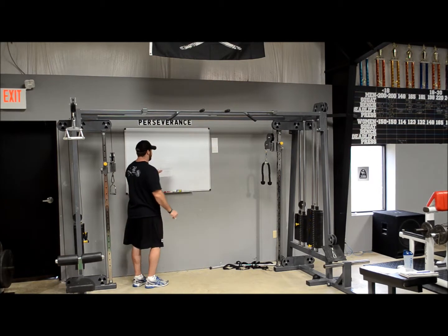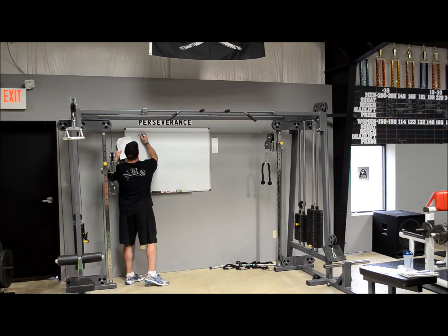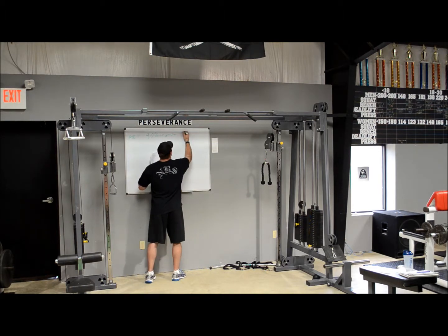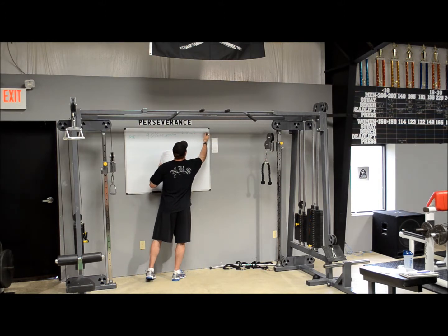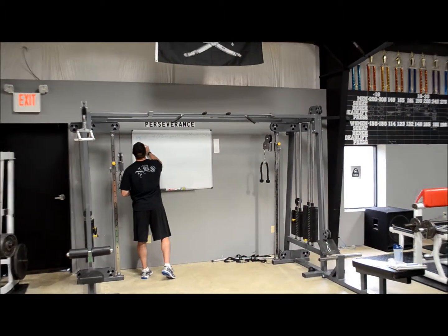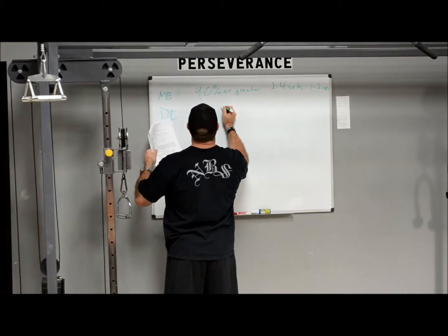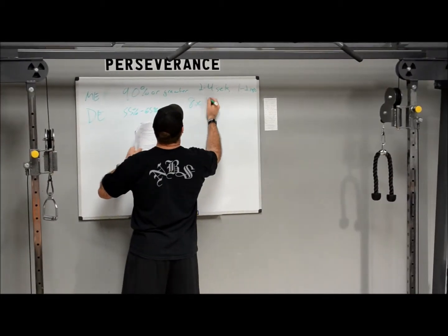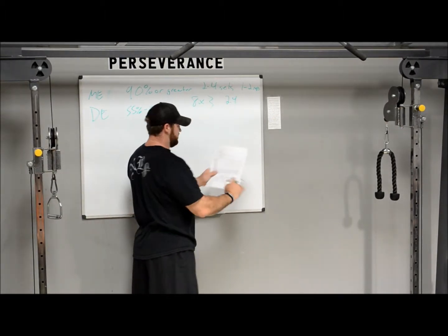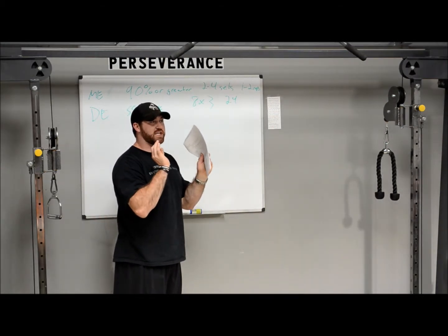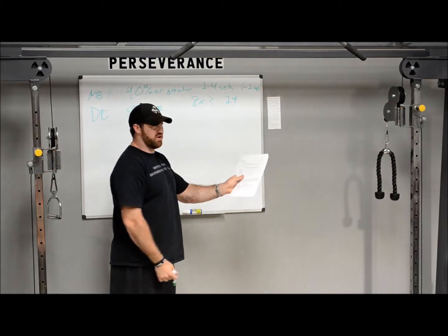When they do their max effort lifts, they try to get about four lifts at 90 percent or greater, doing two to four sets of one to two reps. When they do their speed work — their dynamic effort — they go between 55 and 65 percent. For bench press they do eight sets of three, which is 24 total reps — that's optimal according to Prilepin's chart. So when you're categorizing your training and working within specific percentage ranges, use that chart to plan things out correctly.